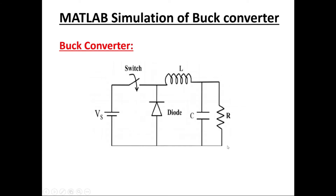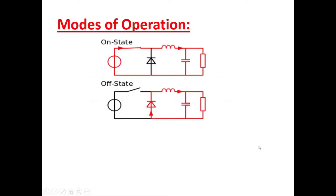Now we can see the modes of operation. During switch on state, the diode is in off state — at that time the inductor is charging and current flows through that path. During switch off state, the inductor has some charge so it has to discharge, and it discharges through the freewheeling diode.